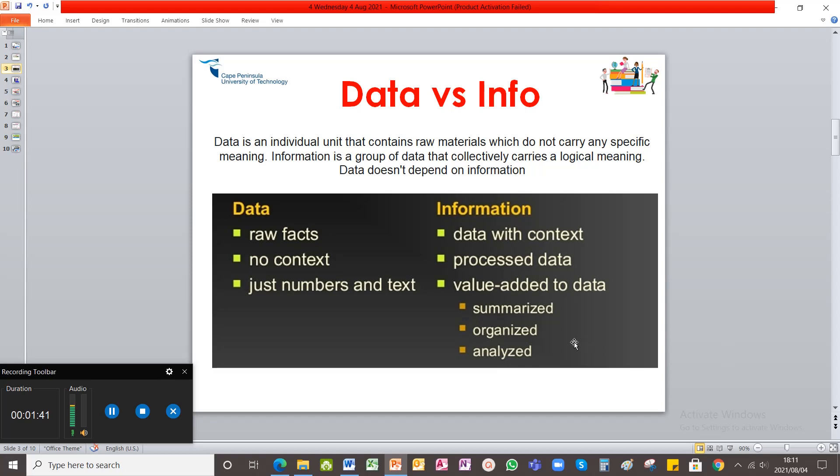Data is an individual unit that contains raw materials. It's unprocessed and they don't carry any specific meaning. So you're just gathering. Then information is a group of data that carries logical meaning. So you took that data, formulated it into a group because you found some correlation or some link between the data.